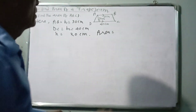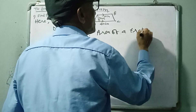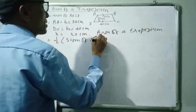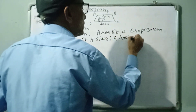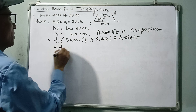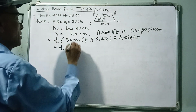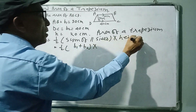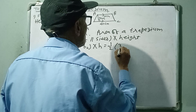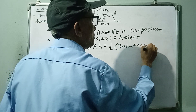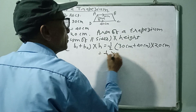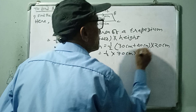The area of a trapezium is equal to half into sum of parallel sides into height. That is the formula. So: area = ½ × (B1 + B2) × height = ½ × (30 + 40) × 20 = ½ × 70 × 20.